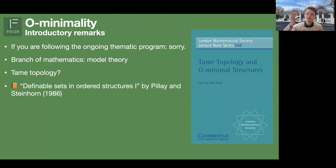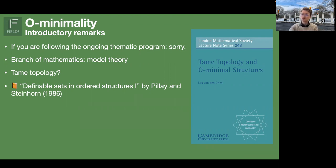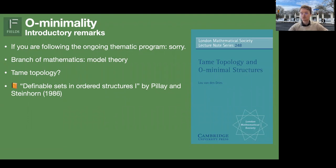The first paper where O-minimality arose or was studied in terms of model theory was 'Definable Sets in Ordered Structures, Part 1.' As the title suggests, there is also a part 2 and a part 3. Part 2 was joined with Julian Knight; the other two are by Pillay and Steinhorn. That's a good reference to start with. It's model-theoretic — if you don't like model theory, then you should read the van den Dries book.